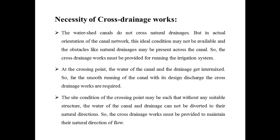Next is the necessity of cross drainage works. The watershed canals do not cross natural drainages, but in actual orientation of the canal network, this ideal condition may not be available and the obstacles like natural drainages may be present across the canal. So the cross drainage works must be provided for running the irrigation system.